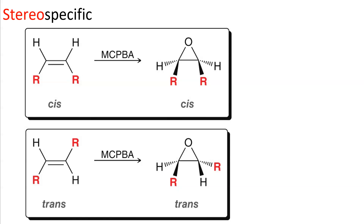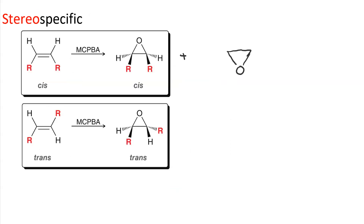If you start out with a cis alkene, you end up with a cis epoxide. If you start out with a trans alkene, you end up with a trans epoxide. What we've shown here is the epoxidation happening above the plane of the alkene, but it could just as easily happen below. So when the epoxide oxygen adds below the plane of the alkene, you'll get the enantiomer. It'll still be cis or trans, but this is represented by the three-membered ring being upside down with the oxygen on the bottom instead of on top.